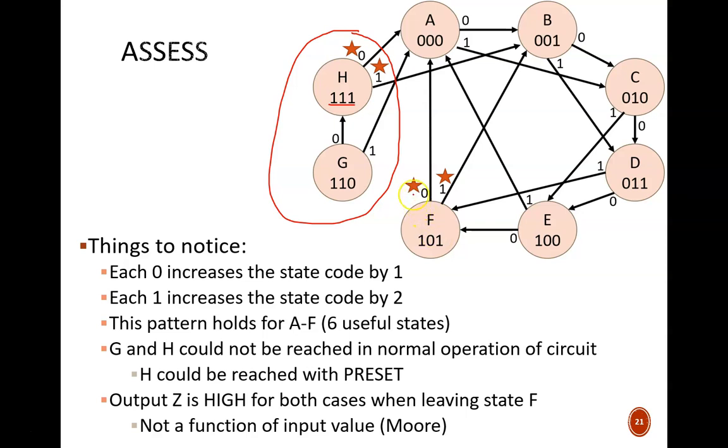Finally, look at the stars. The output is high for both cases when leaving node F. This tells us that it does not matter what the input signal is. If the circuit is at F, it is guaranteed to output high on the next clock cycle. Hmm. The output signal is not a function of the current inputs. That sounds just like a Moore machine.